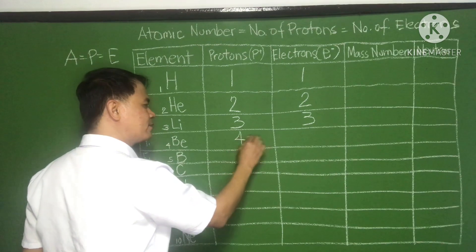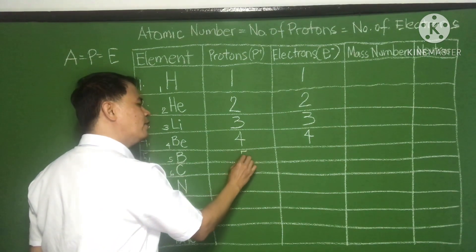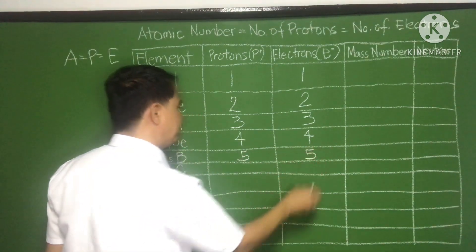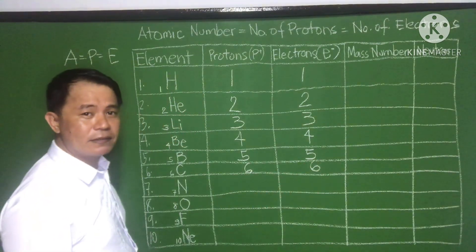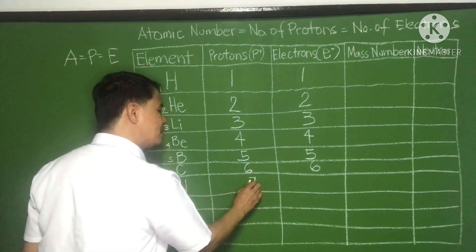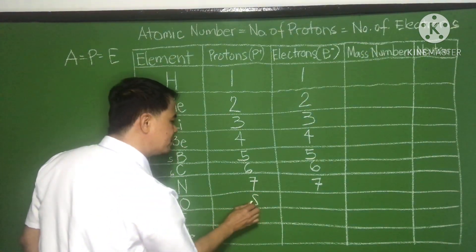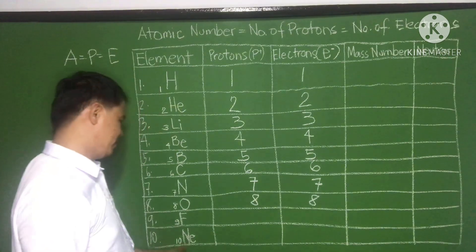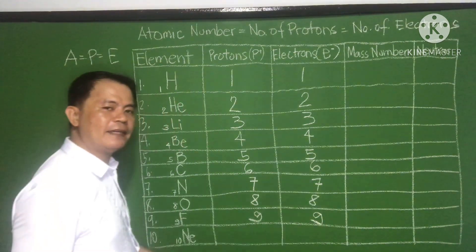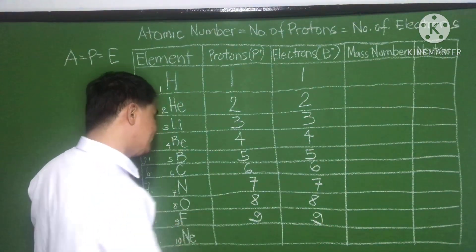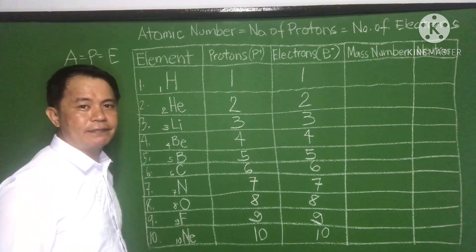Beryllium: atomic number four, protons four, electrons four. Boron: five, five, five. Carbon: six, six, six. Nitrogen: seven, seven, seven. Oxygen: eight, eight, eight. Fluorine: nine, nine, nine. Neon: ten, ten, ten.